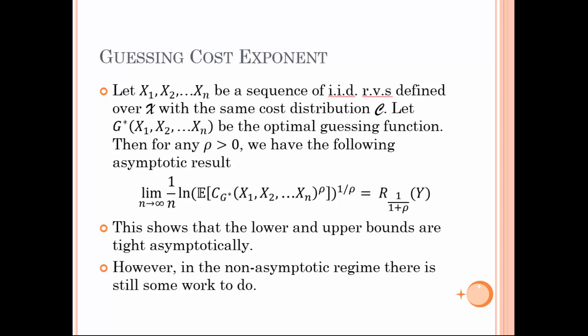So far we have thought about guessing a single random variable. However, in many practical applications, a series of potentially correlated random variables better models real processes. We focused on a series of IID random variables, each defined over the same set X with the identical cost distribution. With the optimal guessing function G*(X1, X2, ..., Xn), we consider the ρ-th moment of guessing these N IID random variables. As N tends to large values, the moment of guessing can be expressed in terms of Rényi entropy of the previously introduced random variable Y. This also shows that the lower and upper bounds are asymptotically tight, although in the non-asymptotic regime there is still some work to do.